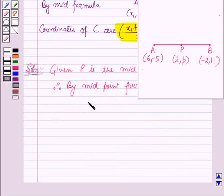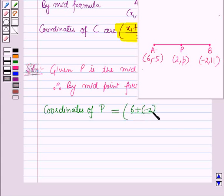So the midpoint formula gives coordinates of P equal to (6+(-2))/2 and (-5+11)/2.